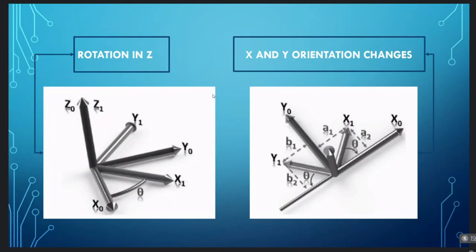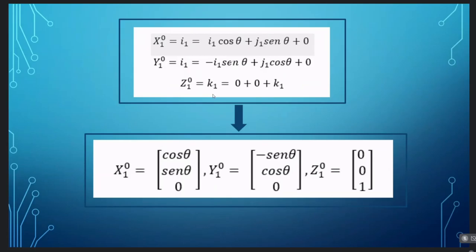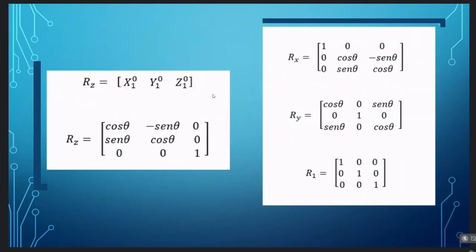It is important to consider that referring to system 0, the components of vector Y1 are equal to minus B1. If we consider that both systems are made up of unit vectors, we find the positions of the vectors. These vectors indicate the rotation of each of the axes Y, X, and Z, although Z remains in the same orientation. We make the vectors into a single 3x3 matrix, which will be the rotation in Z. The first column indicates the position on X of system 1 with respect to X0. The second column indicates the change of Y with respect to Y0. The last column indicates the rotation of Z, but since Z remains in the same rotation, Z equals 1.